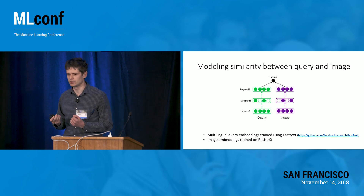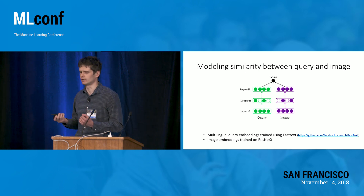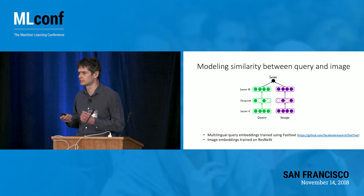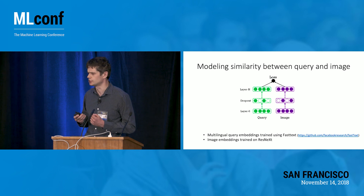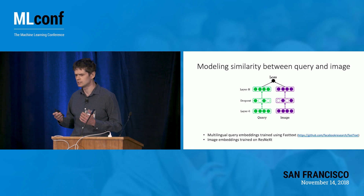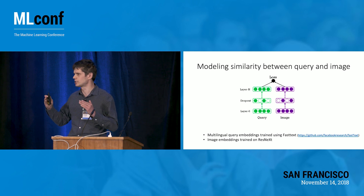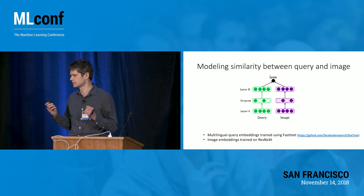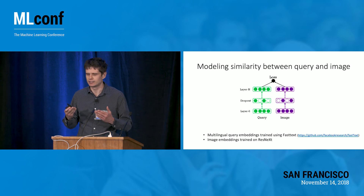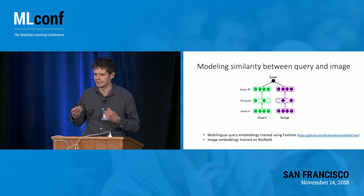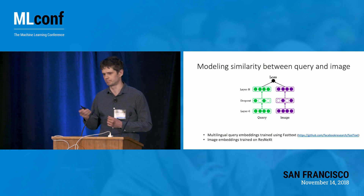For image embedding, we use a convolutional neural network with the ResNet or ResNeXt architecture. The query and image each pass through a separate neural network, and we measure cosine similarity between the transformed vectors to understand how closely a query is related to an image.